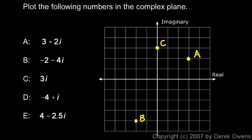Point D is negative 4 plus i. So negative 4 is the real part. Starting at the origin, I go 4 to the left. And then plus i takes me up 1. So I end up right here. That's point D.